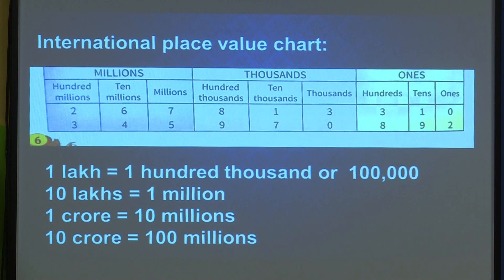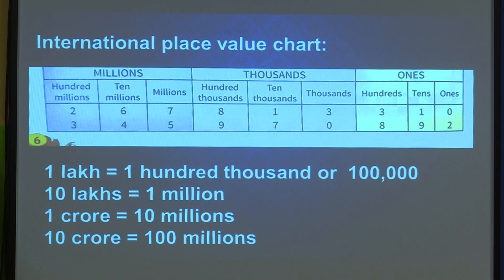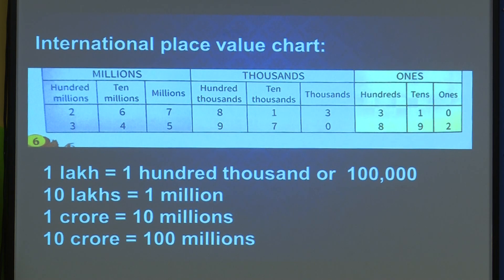Some examples are given. I will read one example and show you. The number is 267,813,310 — that is two hundred sixty-seven million, eight hundred thirteen thousand, three hundred ten. Please pay attention.